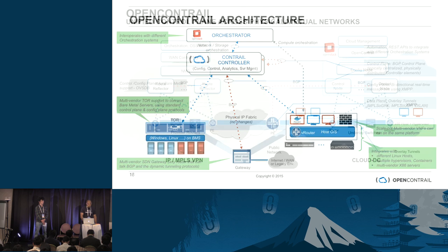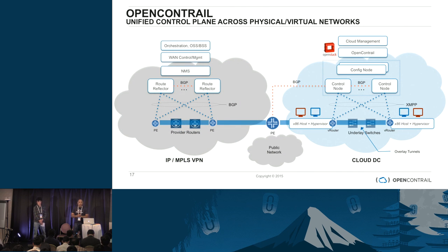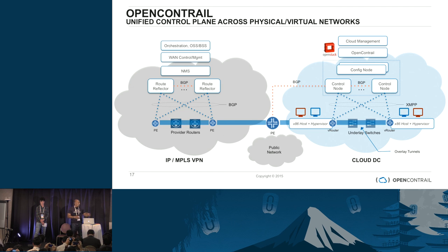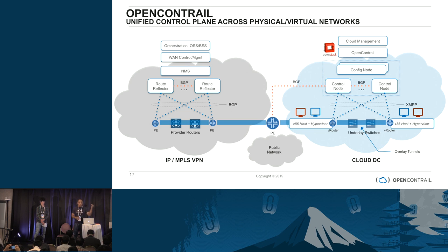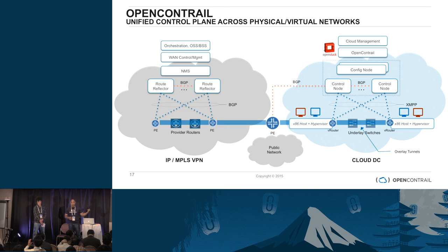One of the reasons service providers actually like us is that if you look at something they have been offering to their end customers for a long time — IP and MPLS VPNs — the architecture there is very similar to the architecture we offer in Contrail. We provide a single unified control plane, and with that single unified control plane using BGP, we have extended the L3 VPN constructs all the way to the hosts in a data center. It could also be extended to a CPE environment. This is one of the things why service providers actually like this environment.